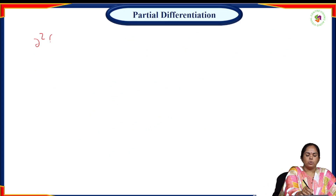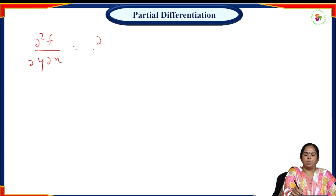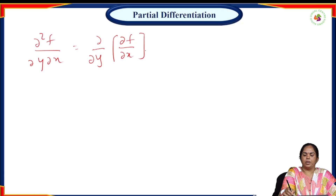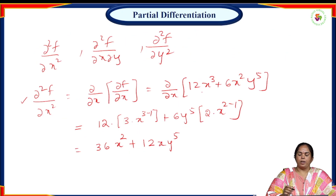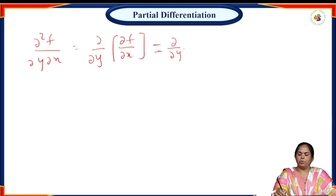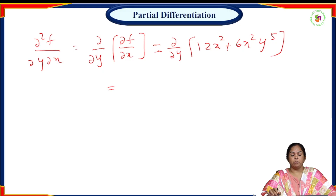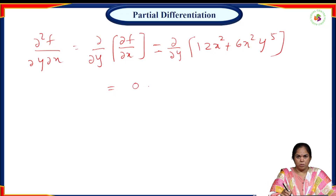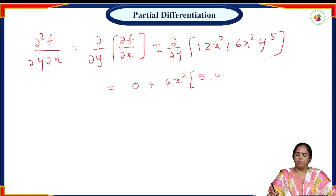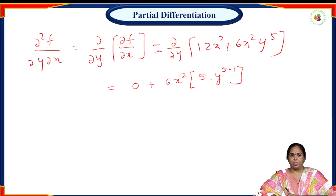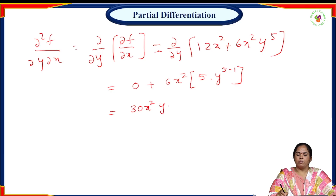Now ∂²f/∂y∂x = ∂/∂y(∂f/∂x). We already calculated ∂f/∂x = 12x³ + 6x²y⁵. Differentiating with respect to y, x is constant, so the first term becomes 0. Then: 6x²·(5y⁴) = 30x²y⁴.